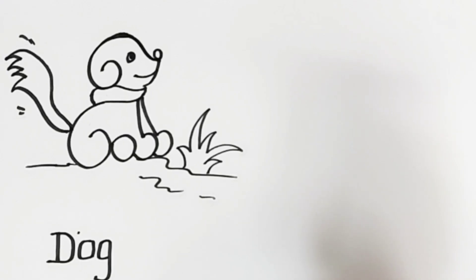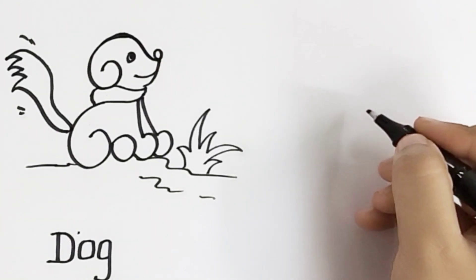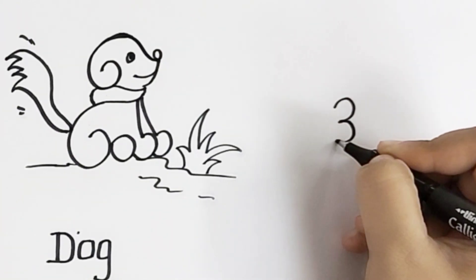So first we will draw and then we will do the coloring. Now we will make sheep with three.